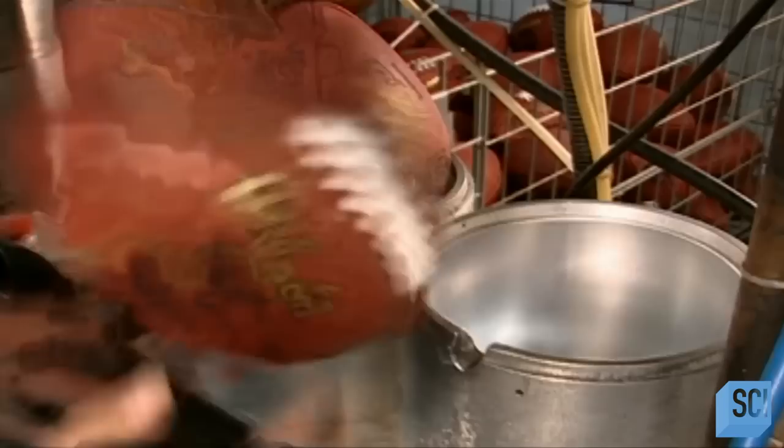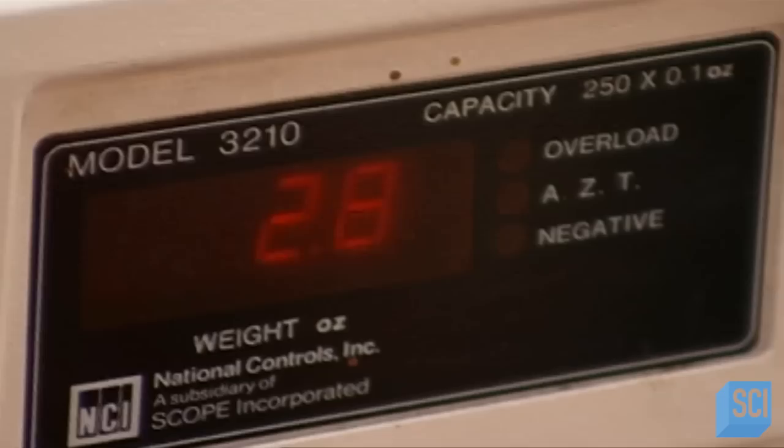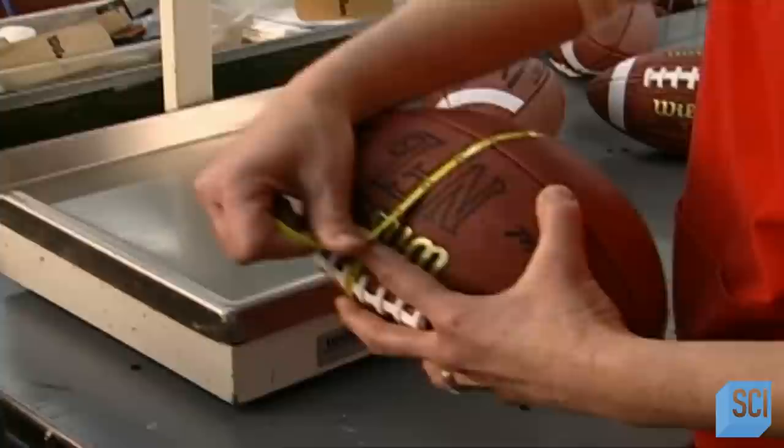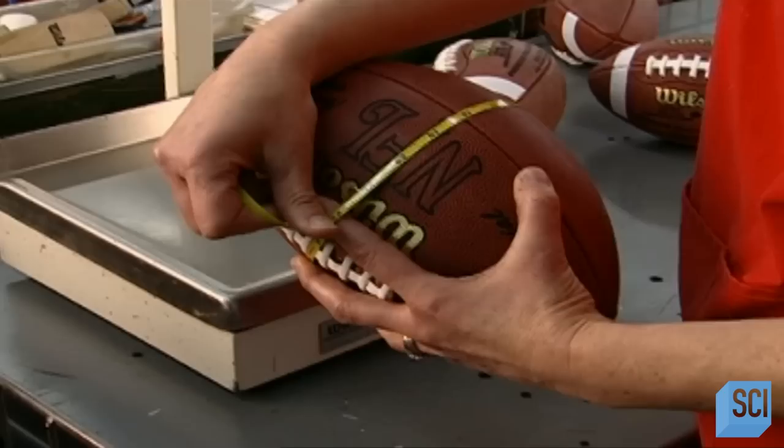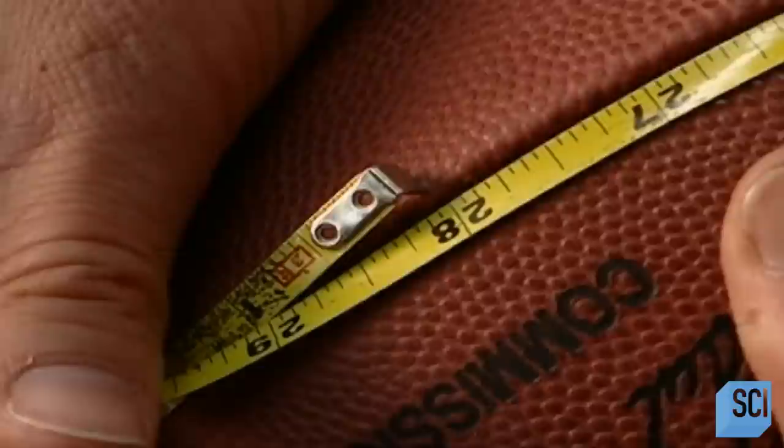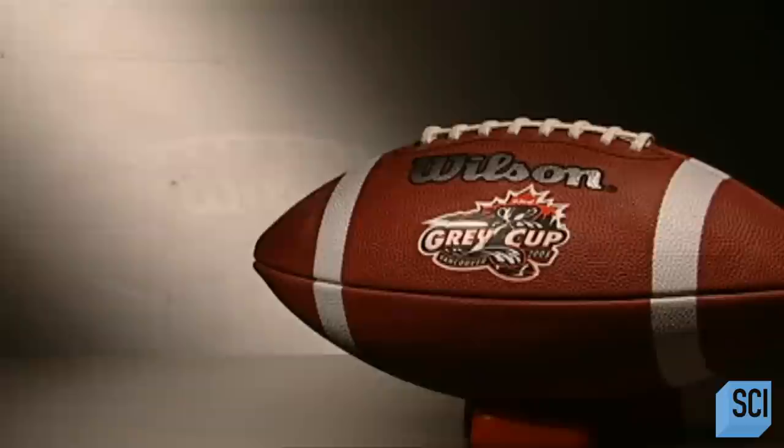Finally, the factory inspects the balls to ensure they're up to standard. Fully inflated, a ball must weigh no more than 15 ounces. It should measure 21 and a half inches through the middle and 28 inches around both ends. After a five-day manufacturing process, these balls are ready for the field.